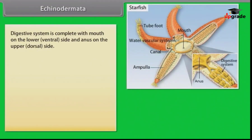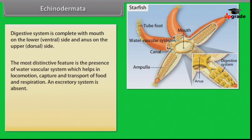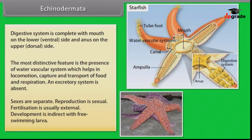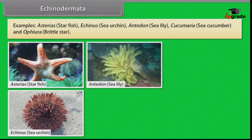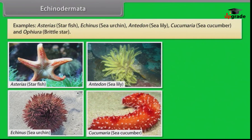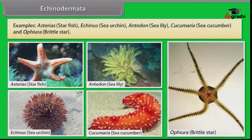The digestive system is complete with mouth on the lower ventral side and anus on the upper dorsal side. The most distinctive feature is the presence of a water vascular system, which helps in locomotion, capture and transport of food, and respiration. An excretory system is absent. Sexes are separate. Reproduction is sexual. Fertilization is usually external. Development is indirect with free-swimming larva. Examples: Asterias (starfish), Echinus (sea urchin), Antedon (sea lily), Cucumaria (sea cucumber), Ophiura (brittle star).